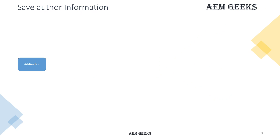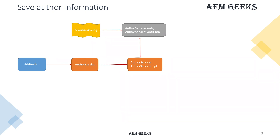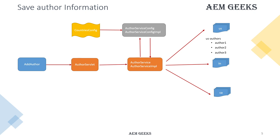More specifically, these are the names of the files I will be creating in this tutorial. We have a component called 'add-author'. This component is a form, but I intentionally hard-coded the fields rather than using drag-and-drop form fields. Then we have an author servlet. Then we will have a service, which is called in the servlet's post method. This service internally will call another service, 'author service config', which gets the factory configurations. So this service will call the factory configuration, and it will return the required factory configuration to the author service. Once the author service has all the required information, it will store the form data under the respective country site.